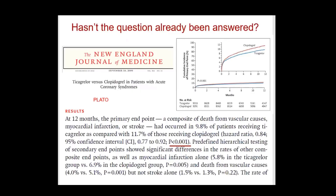Somebody might say this question has already been answered. There is a big study published in the New England Journal in 2009, and all you need to know is the p-value is 0.001. You can see the Kaplan-Meier curve — ticagrelor does better. The hazard ratio was 0.84, with confidence intervals where the upper limit was 0.92, so it doesn't touch one. Everything has already been answered.